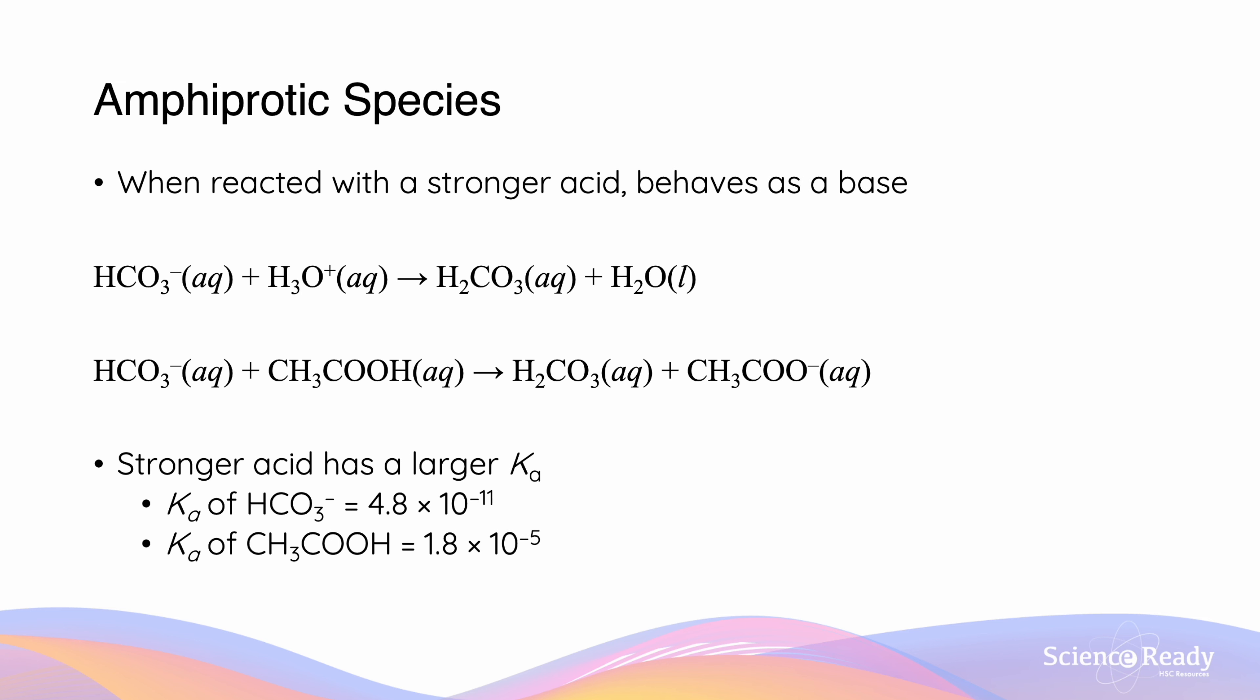Similarly, when reacted with a stronger acid, the hydrogen carbonate will act as a base. The stronger an acid, the larger the Ka. If we look at the Ka of HCO3-, it's 4.8 × 10^-11, which is smaller than that of acetic acid, which is 1.8 × 10^-5. Thus, acetic acid is a stronger acid than hydrogen carbonate.